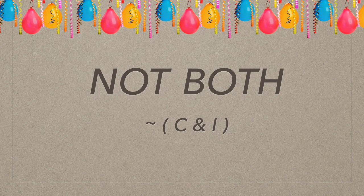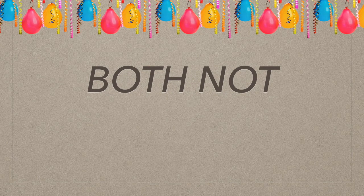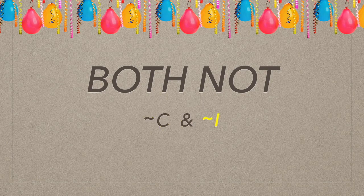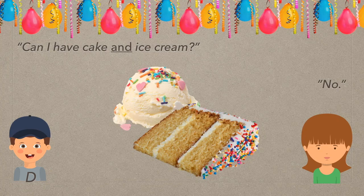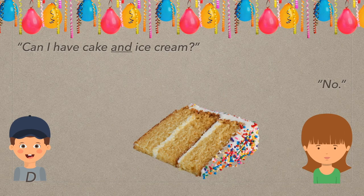This is the correct translation. But don't feel too bad for David — she said he cannot have both, but she didn't say that cake and ice cream are both things he's not having. There is a difference between not both and both not. She didn't say you're not having cake and you're not having ice cream — that's the both not construction. Lucky for David, that's not what mom said. She just said that both together is something that ain't happening, so we can hold out hope that she lets him have just ice cream or just cake.